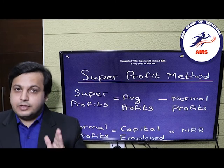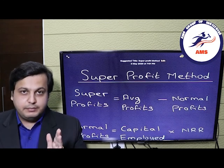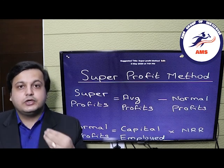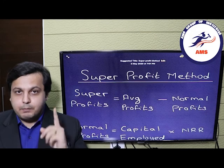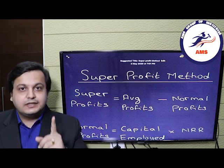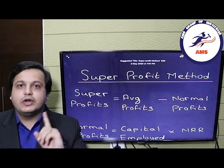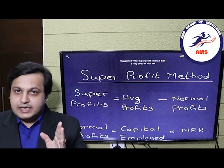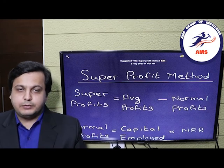So what are super profits? The formula is: average profits of our company minus the normal profits of the overall industry. That is the formula for super profits.